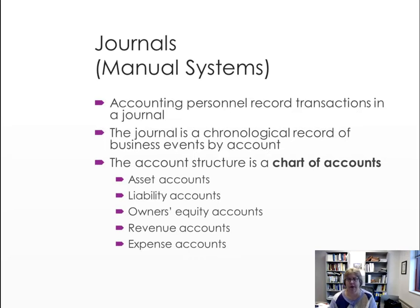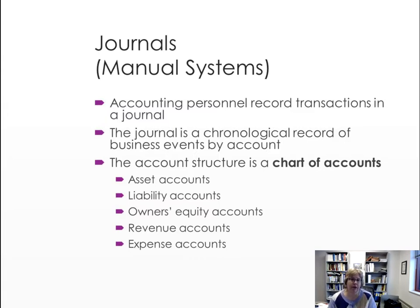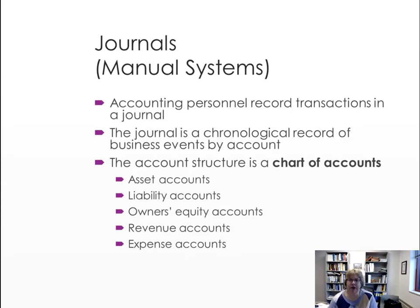At the end of the fiscal year, we close the entries to zero out income and expenses and start a new year. Let's look at a manual system of how entries are recorded and summarized to reach the financial statements. Even in a computerized system the same process applies, though data is stored a bit differently behind the scenes. Every transaction with a financial effect must go into a journal, giving us a complete record of each business event.